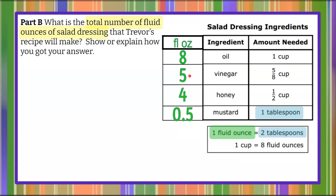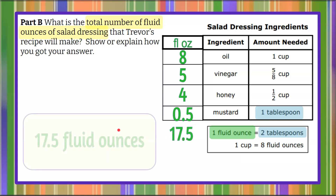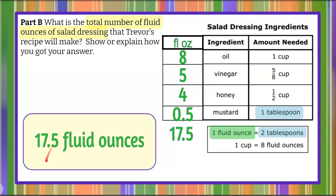Eight plus five is 13. Thirteen plus four is 17. Seventeen plus one-half is 17 and a half, or 17.5. So Trevor has 17 and a half fluid ounces of salad dressing. That's Part B.